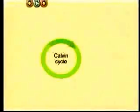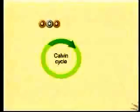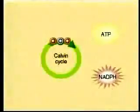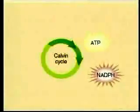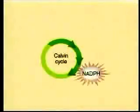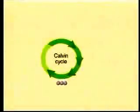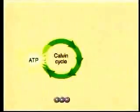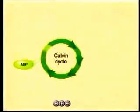Each turn of the Calvin cycle, the five-carbon RU-BPs accept carbon dioxide molecules. Six new PGA-Ls form at the cost of ATPs and NADPHs. A PGA-L molecule leaves the cycle, and the five-carbon starting material is regenerated.